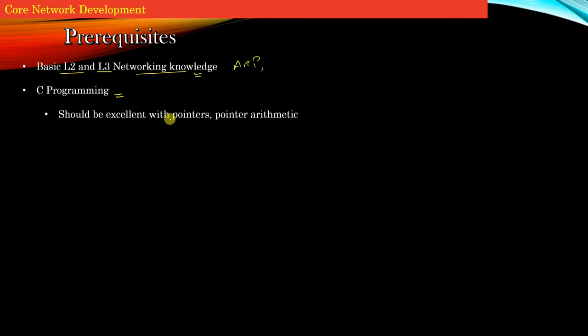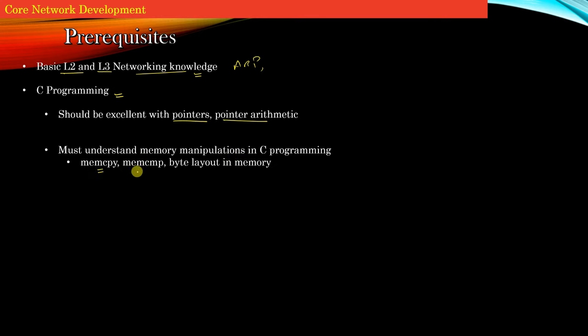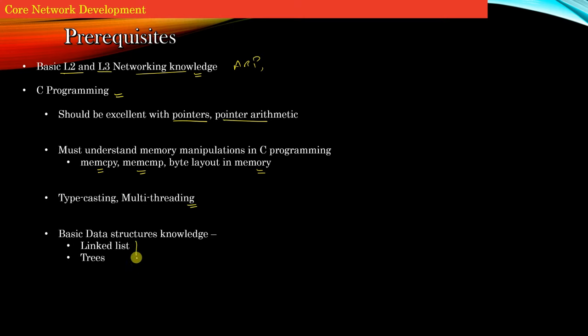What are the prerequisites of this course? You must possess basic knowledge of L2 and L3 networking concepts — for example, you should know how ARP works, what a routing table is, and how a router routes traffic using a layer 3 routing table. You also have to be good with C programming — excellent with pointers and pointer arithmetic, and understand memory manipulations in C, including memcpy, memcmp, and byte layout in memory. You must know what multithreading is, what typecasting is, and have basic data structures knowledge such as linked lists and trees. You will not implement any of these data structures from scratch — pre-cooked libraries for linked lists, trees, etc. will be provided. You only have to invoke the interface APIs of these libraries to get your work done.